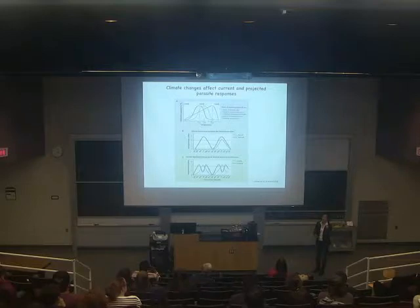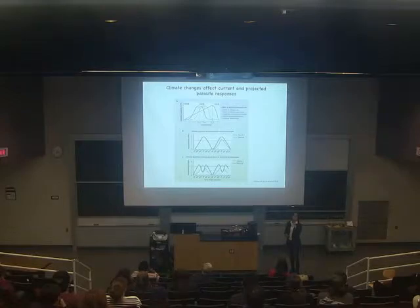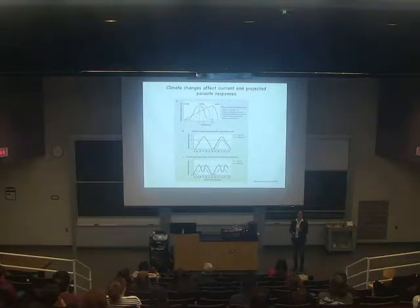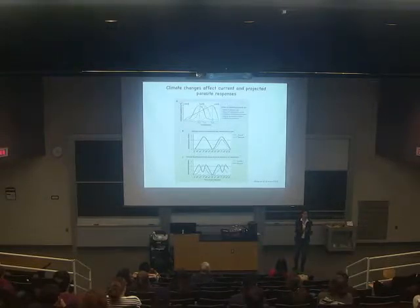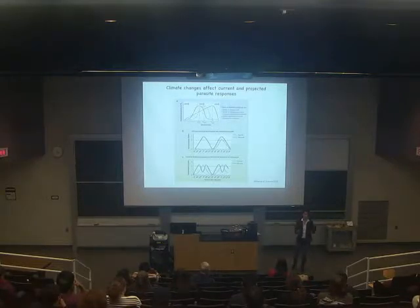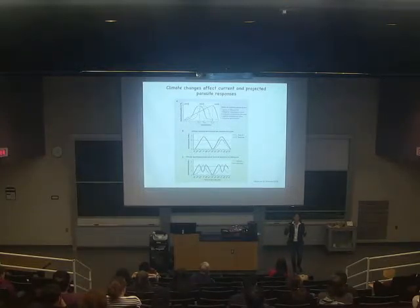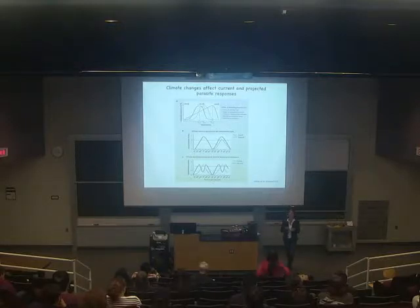But I think there is another component we need to take into account, and that component is host susceptibility. We need to start thinking about how an individual that is exposed to a parasite reacts to that parasite. If I'm very good at fighting the infection and I'm at risk of being infected, am I able to control this infection compared to an individual that is not as good at fighting it? So yes, it's very important to understand exposure and parasite transmission, but it's also equally important to think about host susceptibility and how this comes into the equation when we think about climate warming.